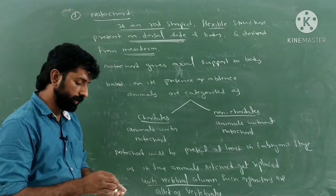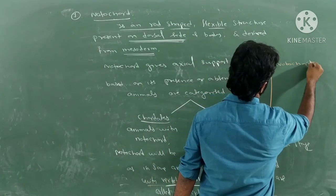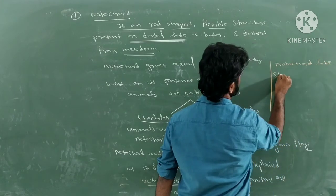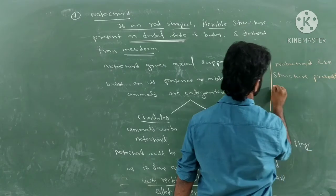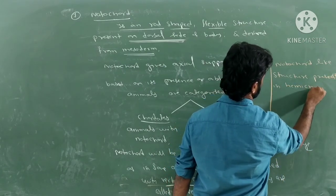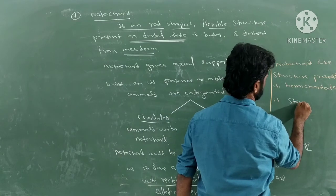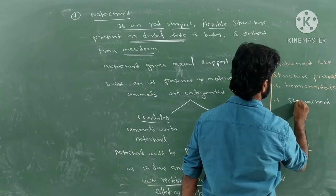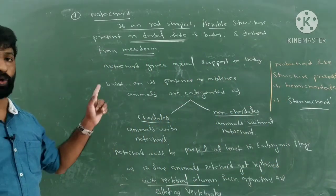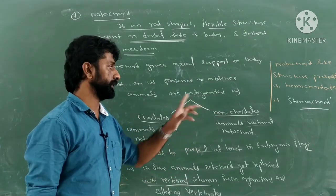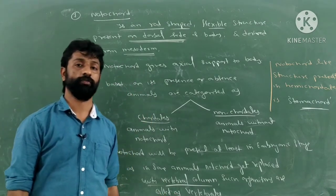What about hemichordates? A notochord-like structure present in hemichordates is called a stomochord. This is very important for the NEET examination. The notochord-like structure present in hemichordates is the stomochord. This covers all seven bases of classification of animals.